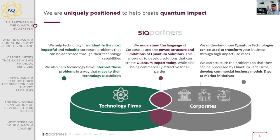We help technology firms interpret corporate problems in a way that matches their technologies — seeing what the problem is at a high level and then interpreting what that means in terms of quantum hardware or software. Conversely, on the corporate side, we help corporates demystify quantum technologies: what is quantum computing, how is it relevant for their business, what should they be doing, and what is the business case behind investing in this technology in the medium and long term?